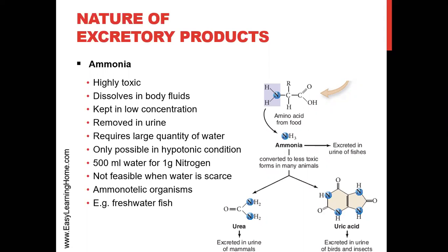If you live in fresh water, there is plenty of water available and water flows in and out of the body easily. But if you live on land, you cannot afford to use so much water. To excrete 1 gram of nitrogen as ammonia requires about 500 ml of water.